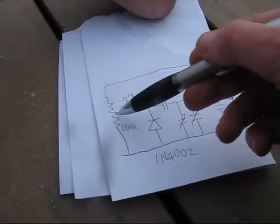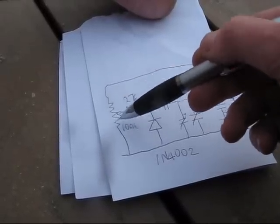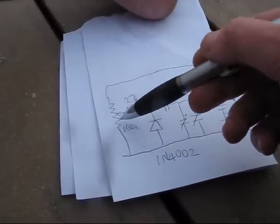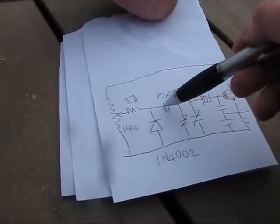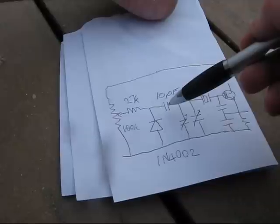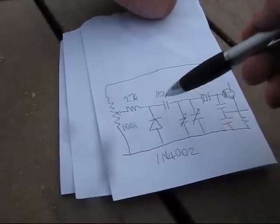So what happens is that as you adjust the fine tuning control, it varies the potential on the diode, and that adjusts its capacitance. The range isn't all that great, but it's enough to slightly change it.